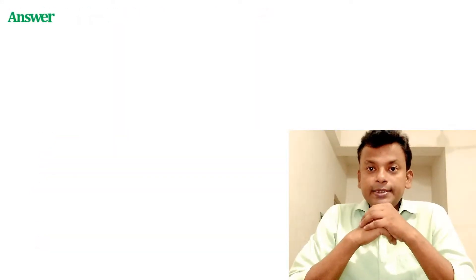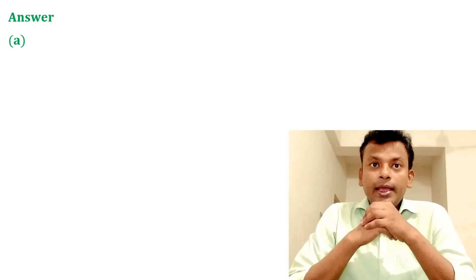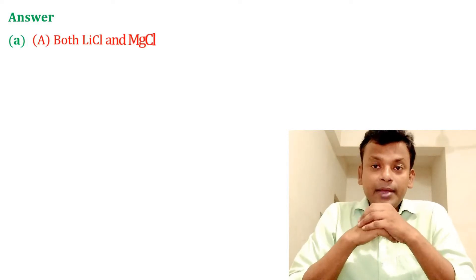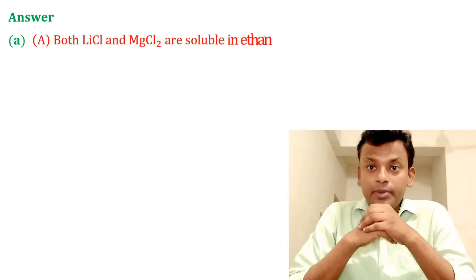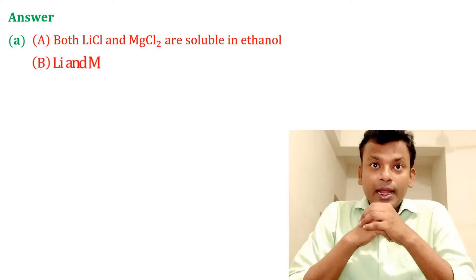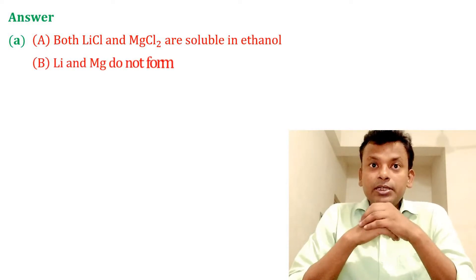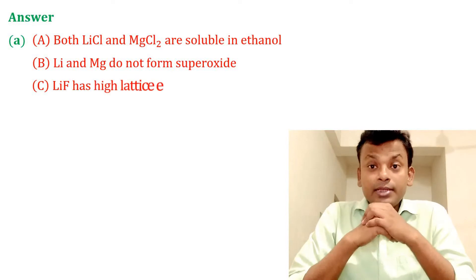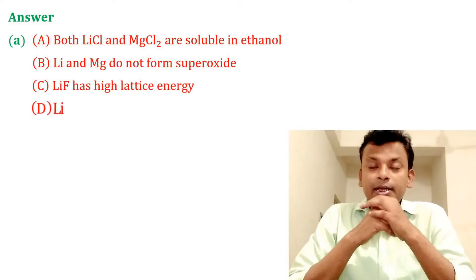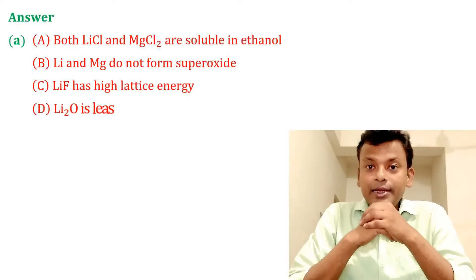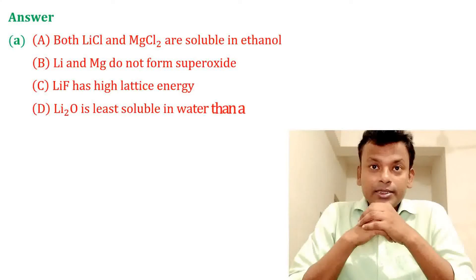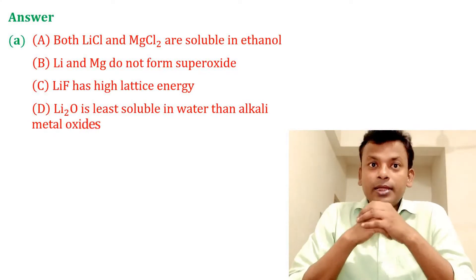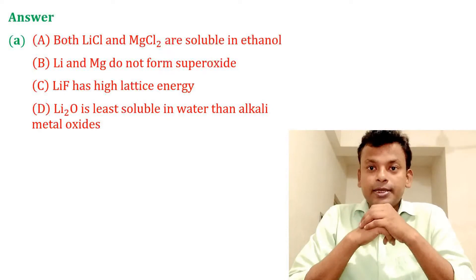Answer: Option A is the correct answer. A. Both LiCl and MgCl2 are soluble in ethanol. B. Li and Mg do not form superoxide. C. LiF has high lattice energy. D. Li2O is less soluble in water than other alkali metal oxides. So option A is the correct answer.